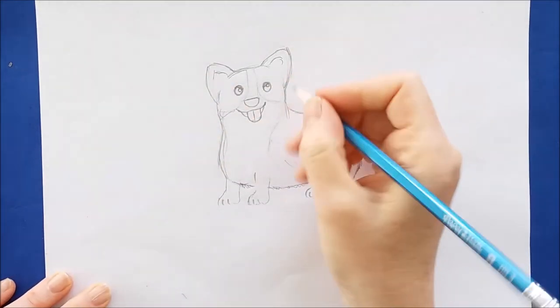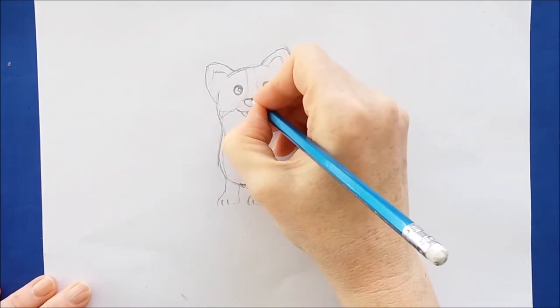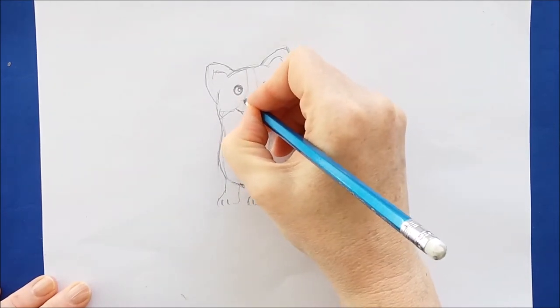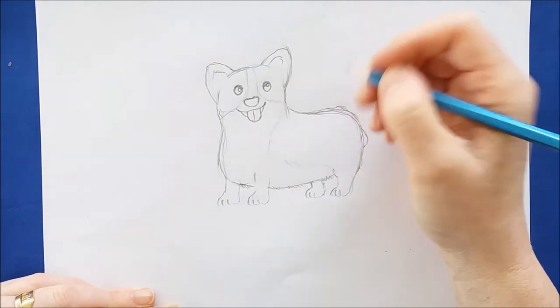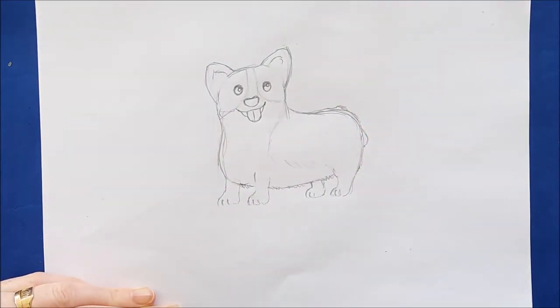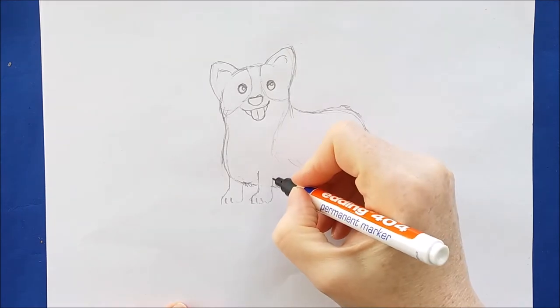I'll just erase the lines here at the ears. And I'm looking at this little guy and I think to myself that he's just about finished. So the next thing I'll do is go ahead and color and outline.